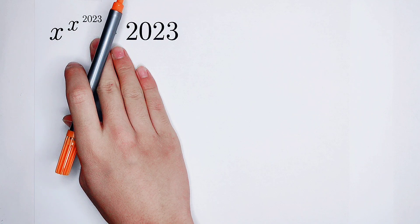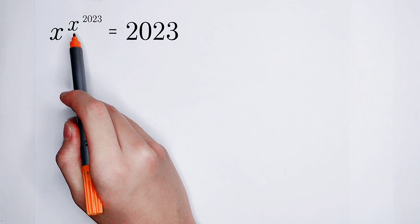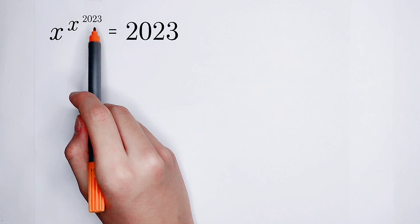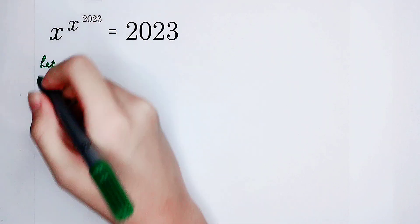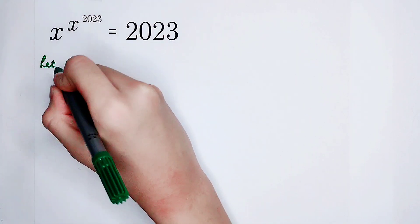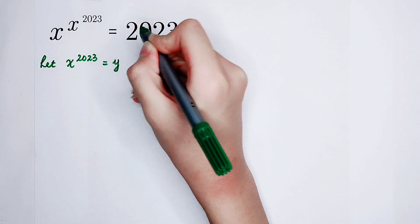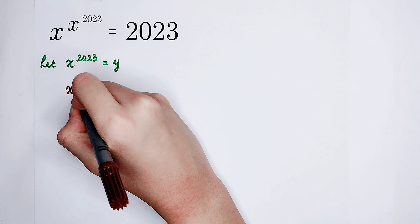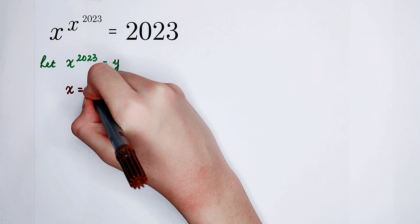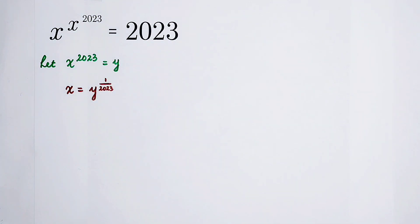First, the left-hand side is much more complicated than the right-hand side. So we can substitute x to the power of 2023 — this exponent — as y. So we can let x to the power of 2023 be equal to y. Then, x is going to be y to the power of 1 over 2023.